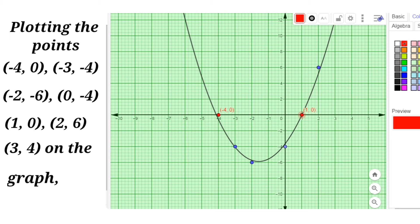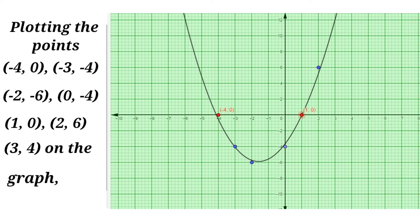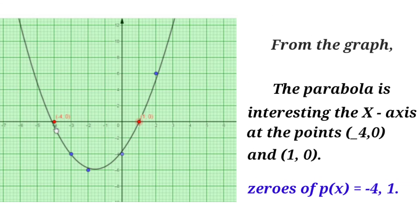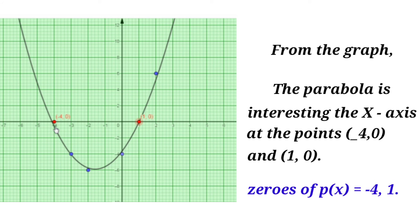From the points of intersection we find the zeros of the given polynomial. From the graph, the parabola is intersecting the x-axis at the points (−4, 0) and (1, 0). Therefore, the zeros of p(x) are −4 and 1. These two are the zeros of the given quadratic polynomial.